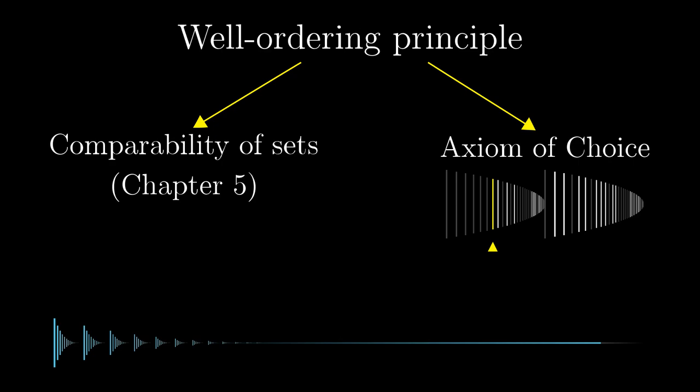In the next chapter, we will use the well-ordering principle for something else. We will finally provide a formal representation of cardinalities and see how we can do transfinite recursion with choice in a smarter way. See you then.